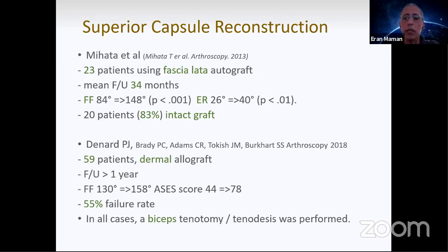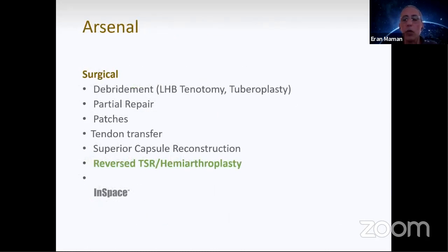A big study done in the United States published in 2018 in Arthroscopy by Tokish, Burkhart, and Denard had 59 patients with dermal allograft. They showed 55% failure rate with improvement of forward flexion from 130 to 158, around 30 degrees, and ASES score improved from 48 to 78. In all these cases the biceps were either tenotomized or tenodized. So we have mixed results and maybe the tenotomy or tenodesis of the bicep was the effect.